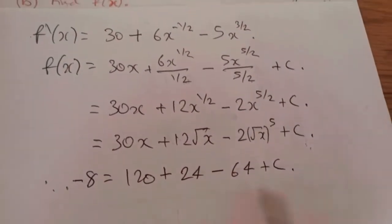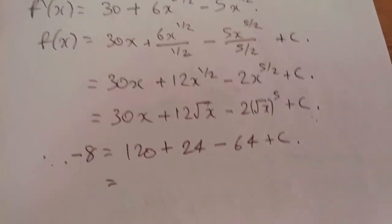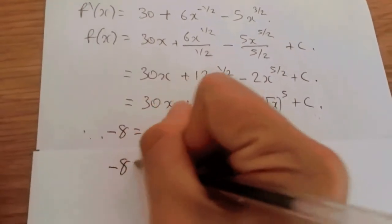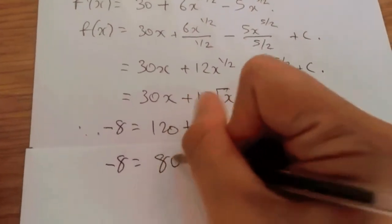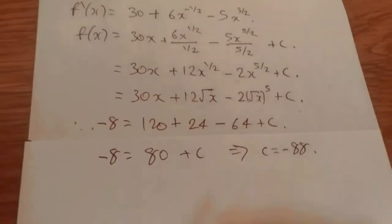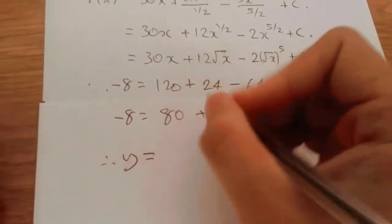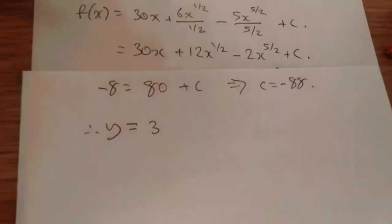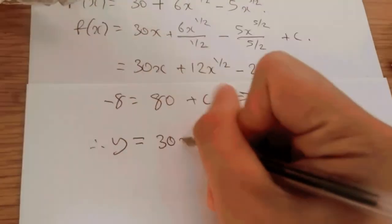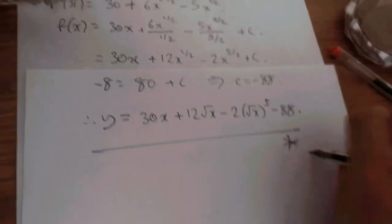Now we just pretty much summarize all this. So adding these two, you get 144, take away 64. So minus 8. So adding and minusing with this should give us 80 in the end, plus c. And subtracting 80 across will give us minus 88. That's it. Now all we have to do is put this back into c, and then rewrite the whole equation. So therefore, y equals 30x plus 12 root x minus 2 root x to the power of 5 minus 88. And I say guys, hope this helps.